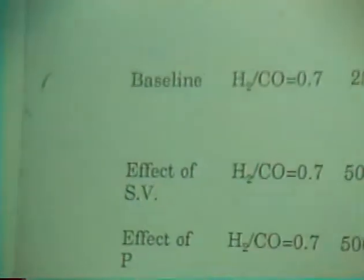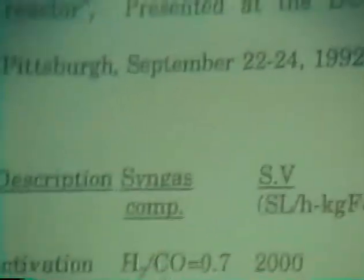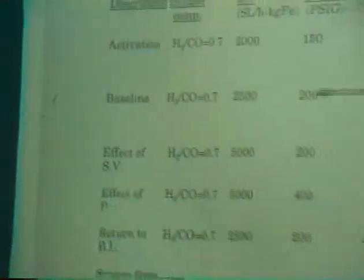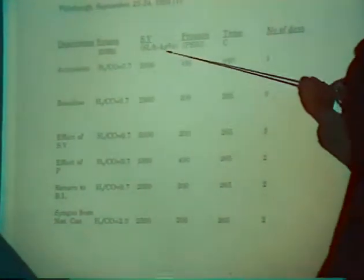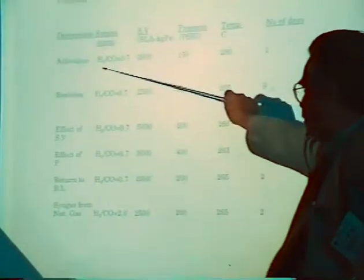Now I'll talk about results obtained from the first set of catalysts. The run conditions for the Laporte demonstration pilot plant run are given here. The baseline conditions: the gas ratio H2 to CO is 0.67, space velocity is 2,500 normal liters per hour per kg of iron, 200 psi pressure, temperature is 265 degrees. The run was conducted for nine days at these baseline conditions. Before that, it was activated under these conditions: temperature at 280 then 265, pressure is 175 psi, space velocity is 2,000, and the syngas H2 to CO ratio is 0.67.